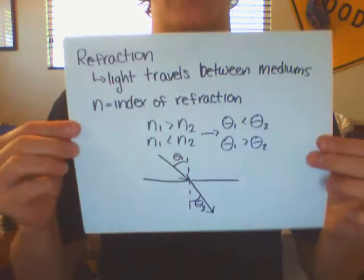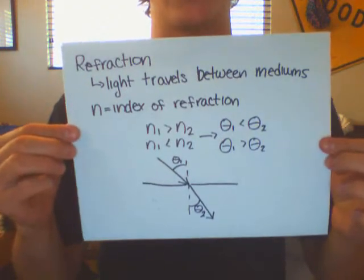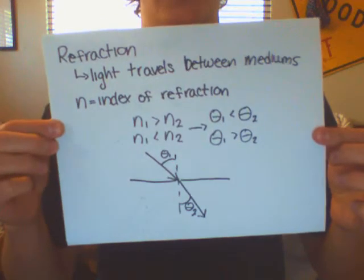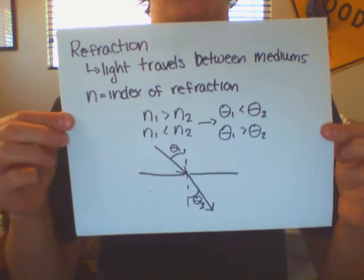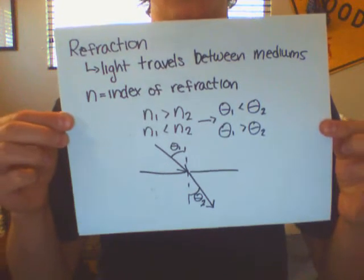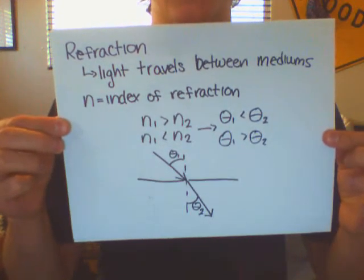We also discussed refraction, which occurs when light travels between two mediums. Given an index of refraction n, when the initial index is greater than the secondary medium's index, then the initial angle to the normal will be less than the final angle to the normal.